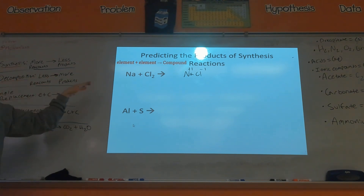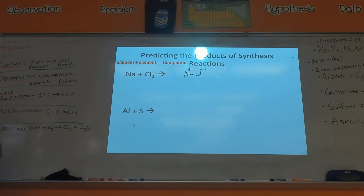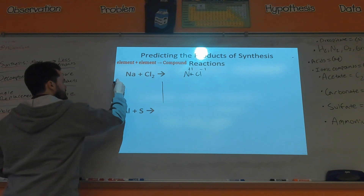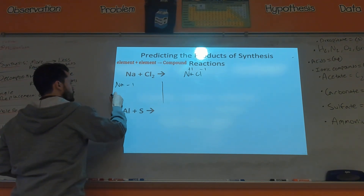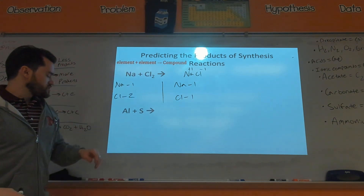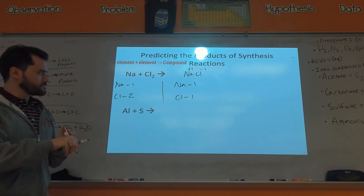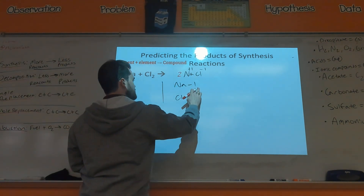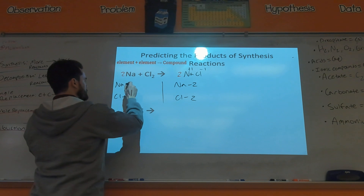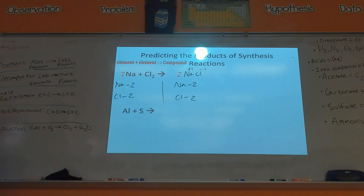I'll give you a break from writing states of matter — just write the products. To balance Na + Cl₂ → NaCl: I have one Na and two Cl's on the left, one Na and one Cl on the right. I would need to double the NaCl, giving me two of each, then double the sodium. Now we're balanced.